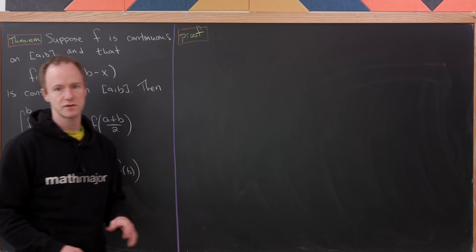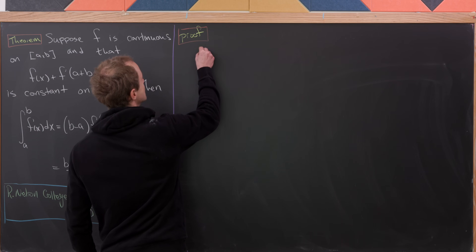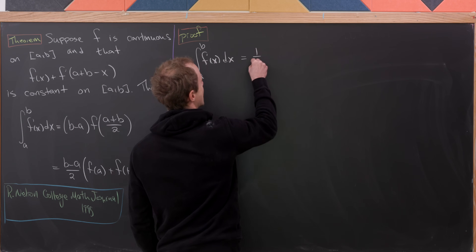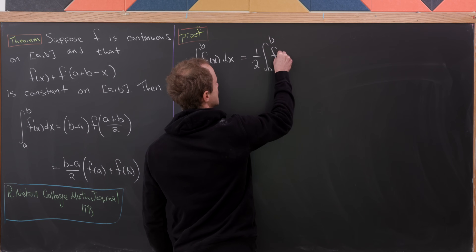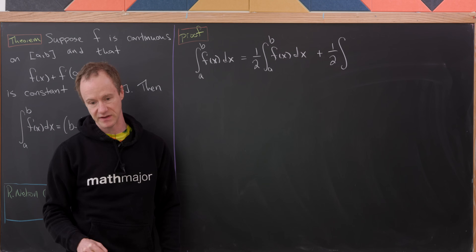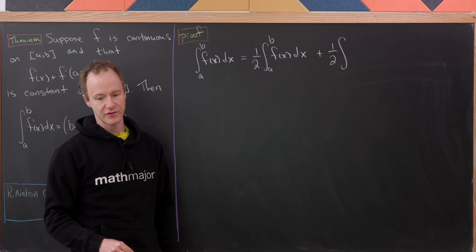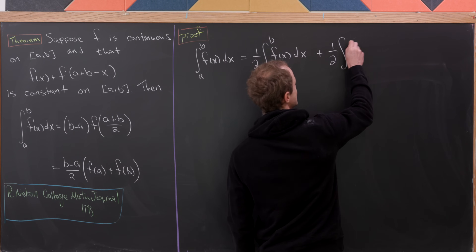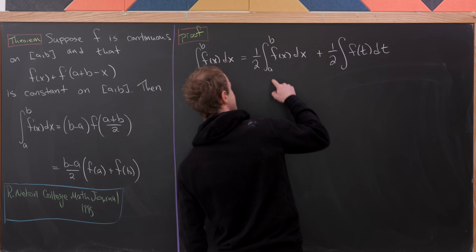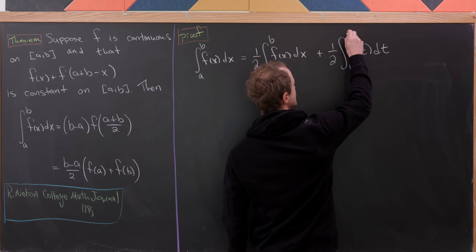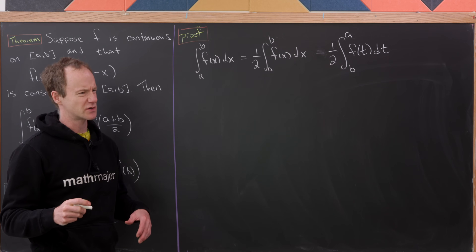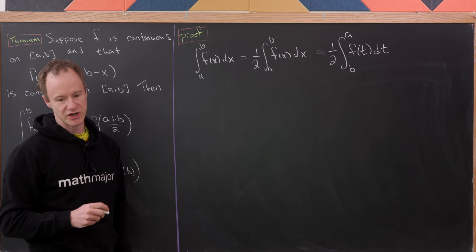It's a fairly straightforward calculation. We start with the integral from a to b of f(x) dx, and write this as one-half of the integral plus a half times another copy of the integral. For the other copy, we change the dummy variable from x to t, getting f(t) dt, then switch the bounds of integration from a to b to b to a, and change the plus to a minus to account for that order of integration change.